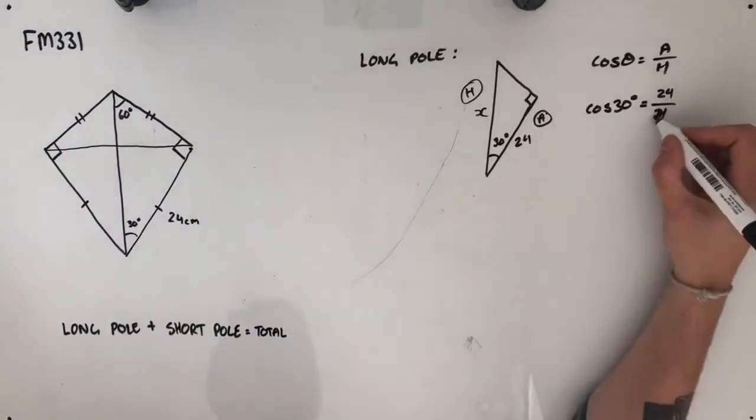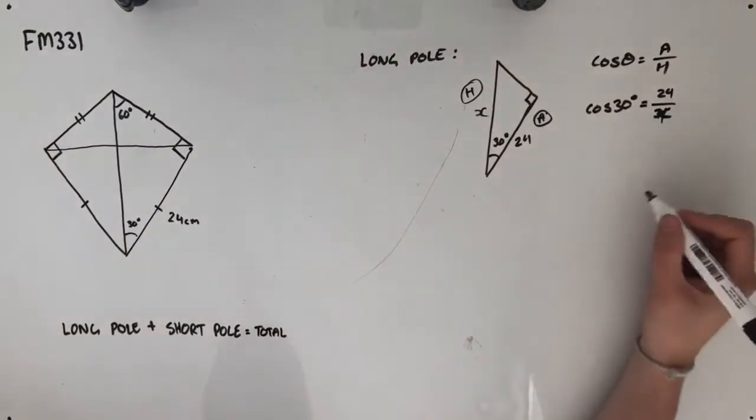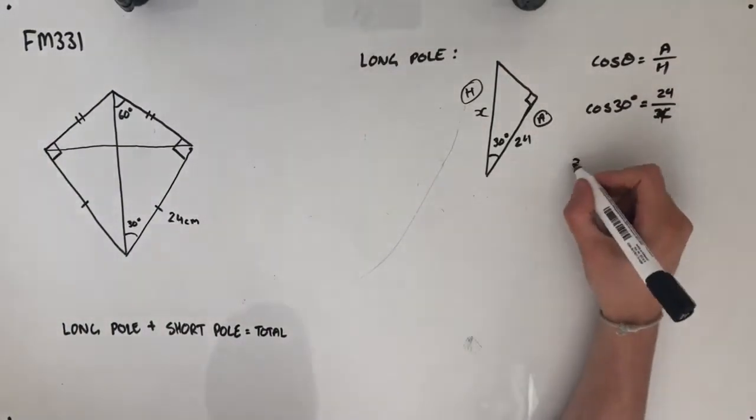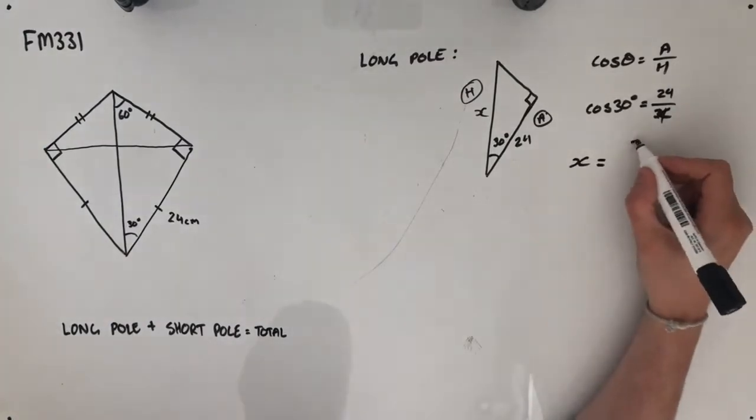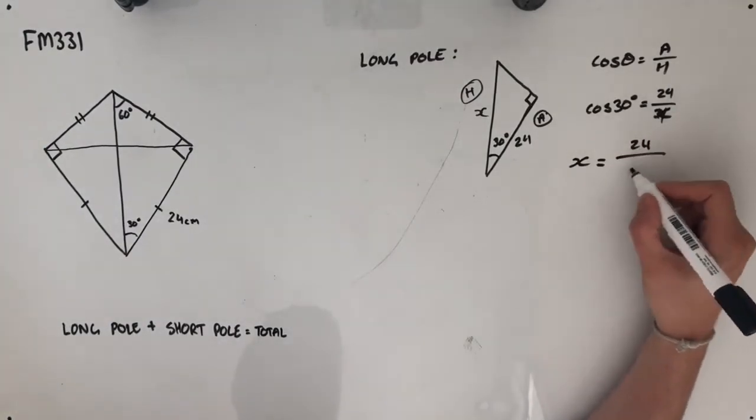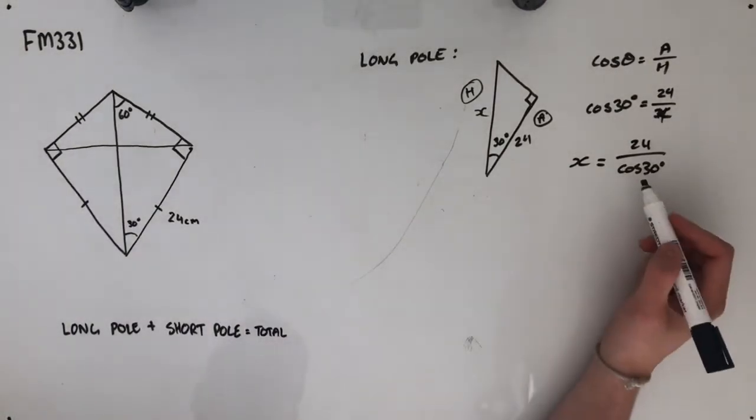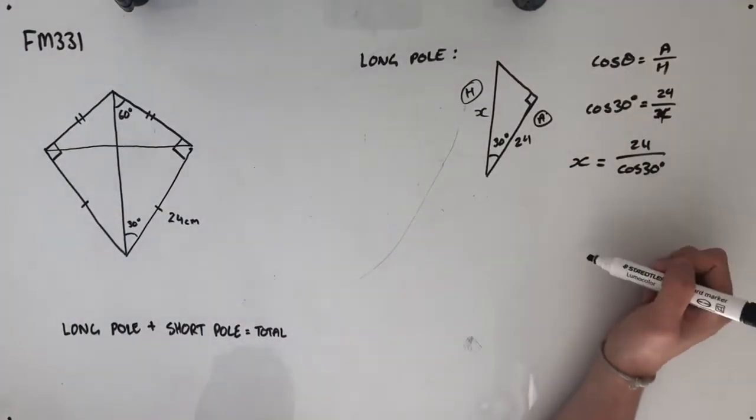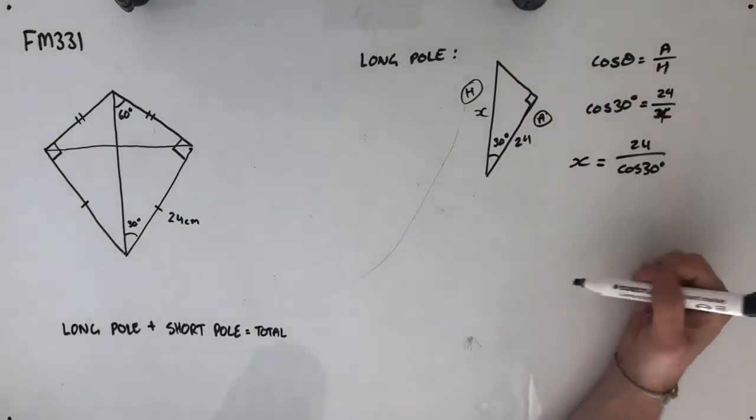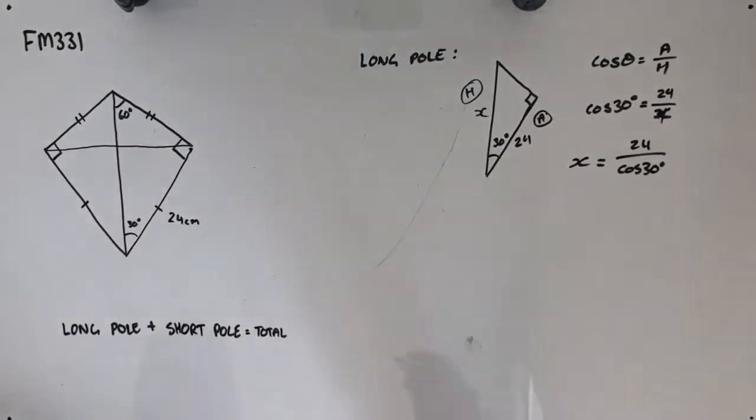Inserting my known values, I get cos of 30 degrees is equal to 24 over h. Sorry, 24 over x, since I've given that a value there, x. Rearranging this, we get x is equal to 24 over cos 30 degrees. And I'm going to leave it there because I'll use this exact value in my calculations and then approximate once I've made my final calculation.